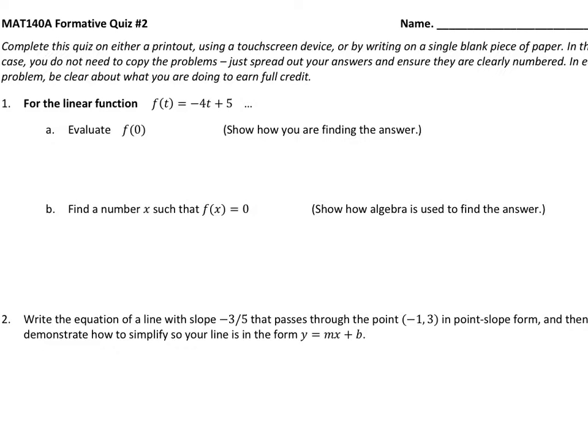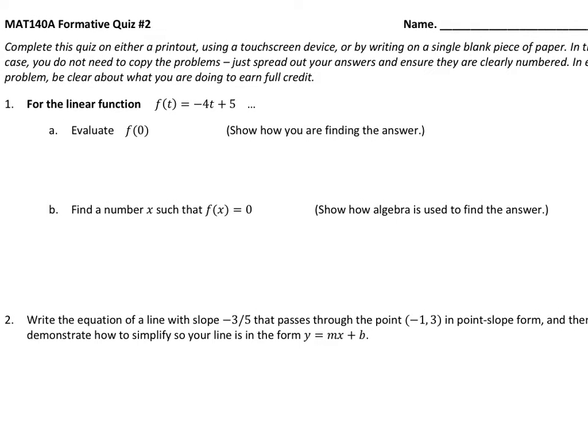So in 1a, we're trying to evaluate f of zero. So what this means is that we're being told that with this algebraic description of the function, this is telling us that when the input is t, to find the output, we apply the formula minus 4 times t plus 5. This is telling us the letter that goes in is called t, and this is telling us the formula for the outputs. So when we write f of zero, we're saying make zero the input. So put zero in place of t here. So if you put zero in place of t here, you have to put zero in place of t everywhere you see it. So that's going to look like f of zero is going to be minus 4 times zero plus 5. And we know with our order of operations that this multiplication gets done first. So we have minus 4 times zero is zero, plus 5 is 5. So we would write f of zero equals 5.